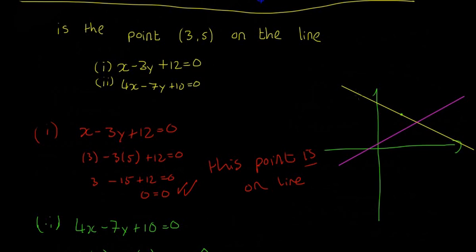The yellow line, x - 3y + 12 = 0, does pass through the point (3, 5). The purple line, 4x - 7y + 10 = 0, doesn't go through the point. This visual confirms our calculations.